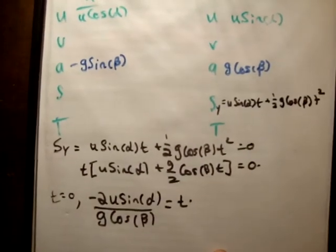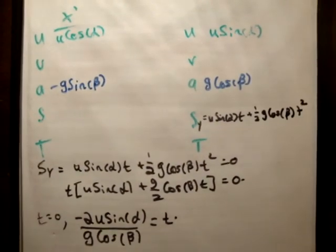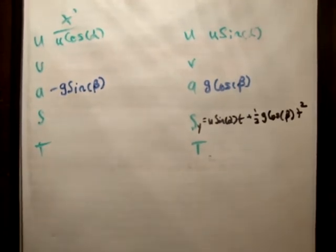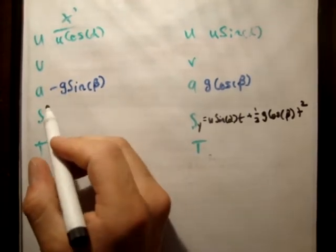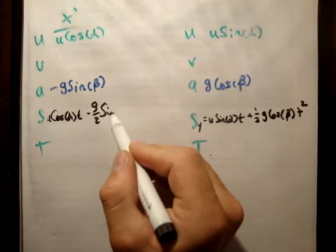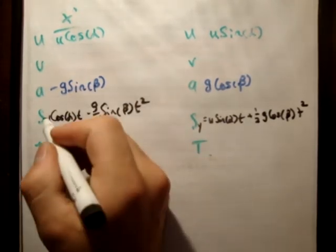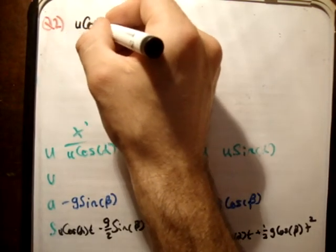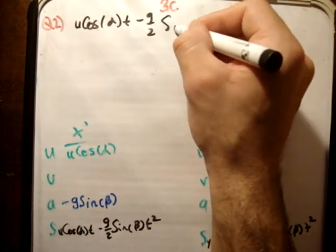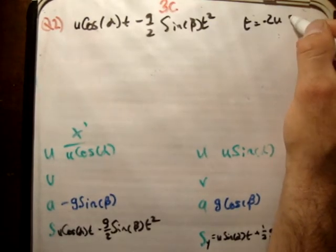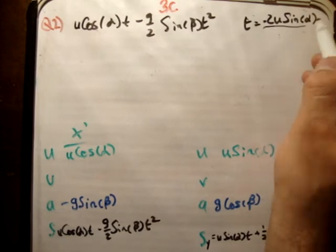The next thing we're asked to do is find the range. We found the time at which it's at its maximum range, so now we plug that time into the expression for S sub x. The expression for S sub x is u cos alpha · t minus (g/2) sin beta · t², where t equals minus 2u sin alpha over g cos beta.